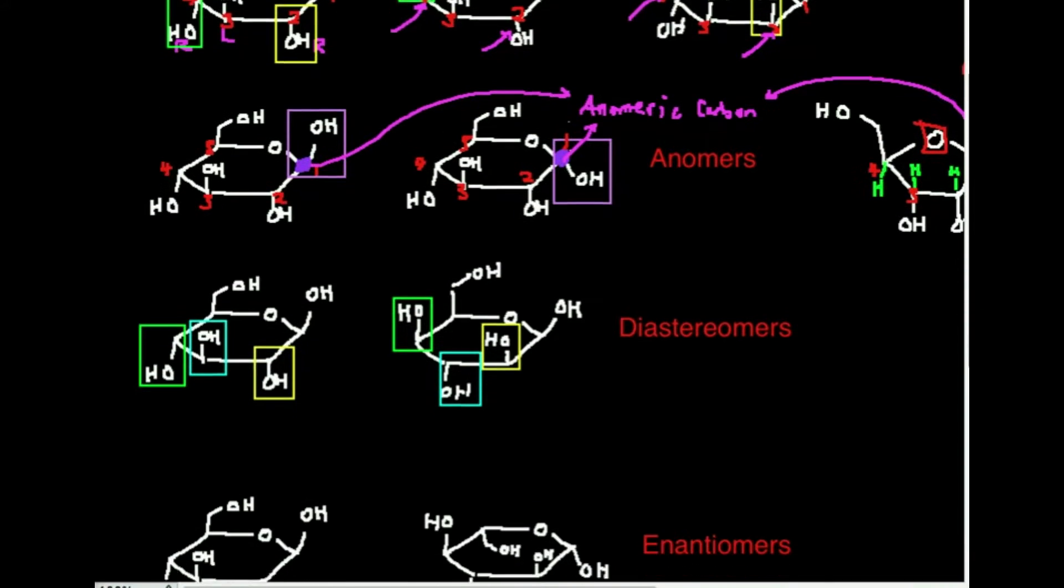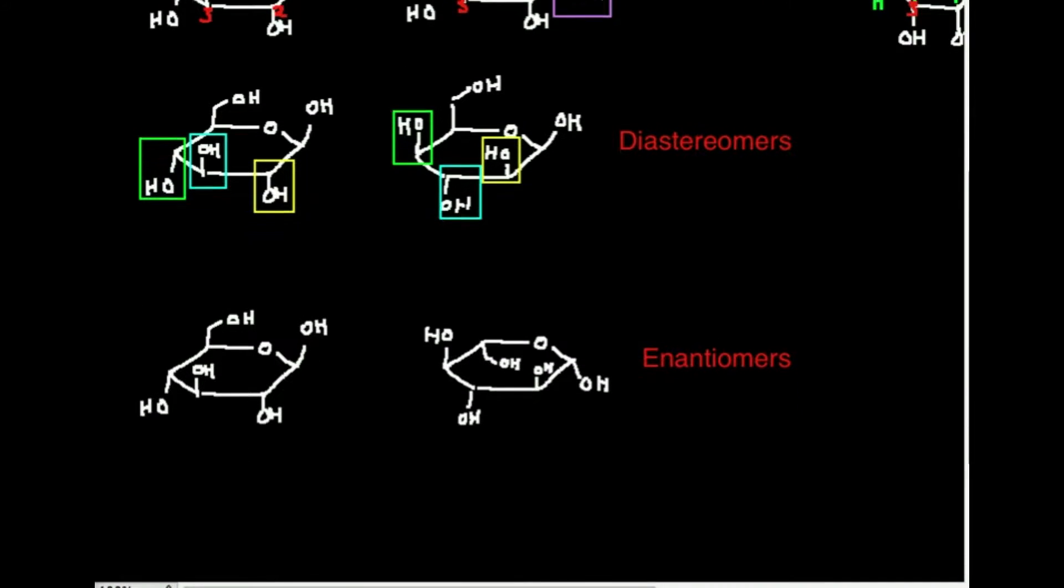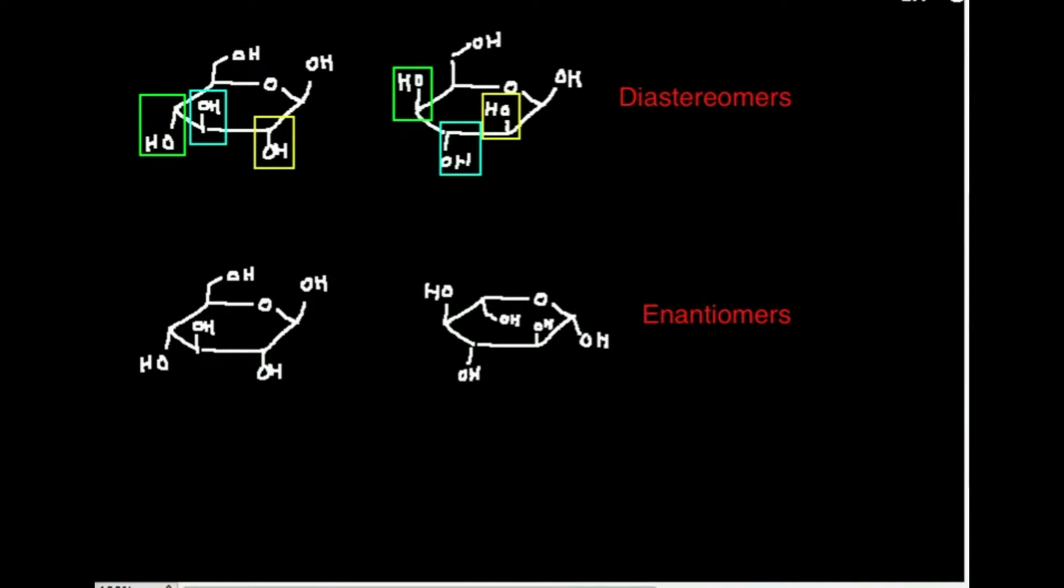An anomer is a special case of epimers where they still only differ at one position, but that one position has to be the anomeric carbon. And the anomeric carbon generally is the carbon that is right next to this oxygen. In the way that I draw it, I always draw it so the anomeric carbon is clockwise from that. In this video, we're going to do two more examples, we're going to talk about diastereomers and enantiomers.